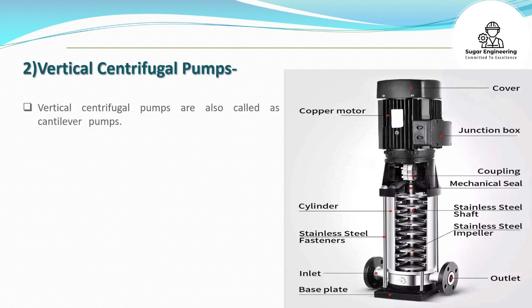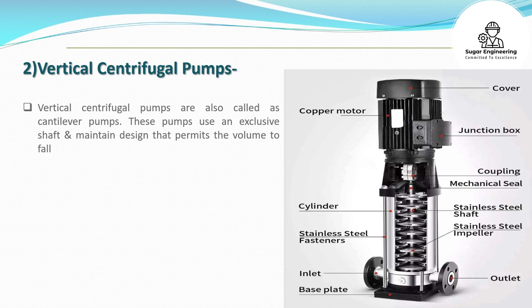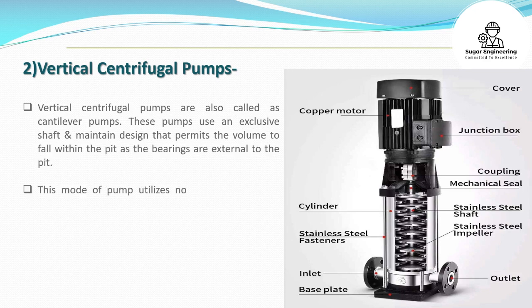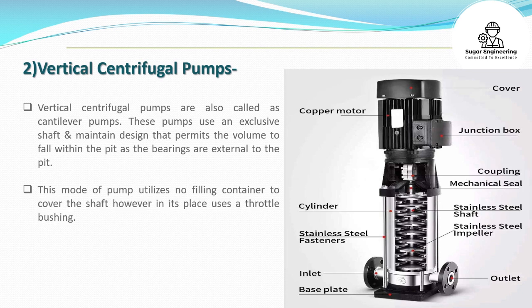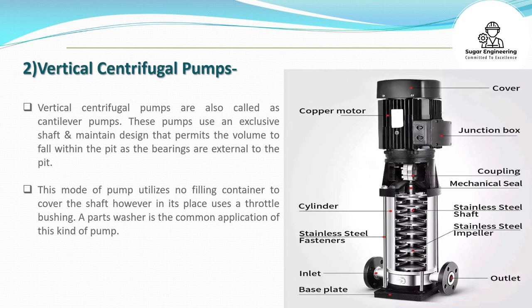2. Vertical Centrifugal Pumps, also called Cantilever Pumps: These pumps use an exclusive shaft and bearing design that permits the volume to fall within the pit while the bearings are external to the pit. This type of pump utilizes no stuffing box to cover the shaft, but instead uses a throttle bushing. A parts washer is a common application of this kind of pump.